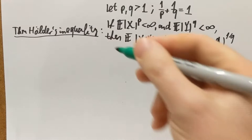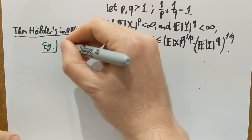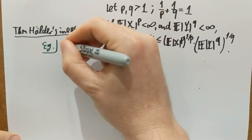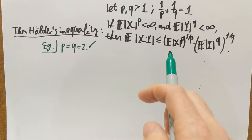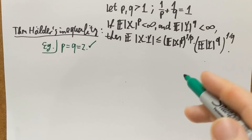Notice the following special case: if P equals Q equals 2, then 1 over P is 1 half and 1 over Q is 1 half — they do add up to 1, so this example is covered by Hölder's inequality. The statement then becomes that the expectation of the product is bounded from above by the square root of the second moment of X and the square root of the second moment of Y. This is called the Cauchy-Schwarz inequality.